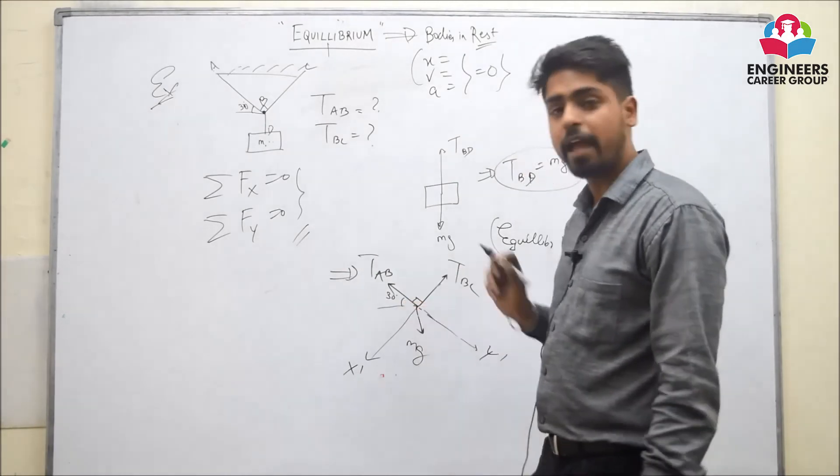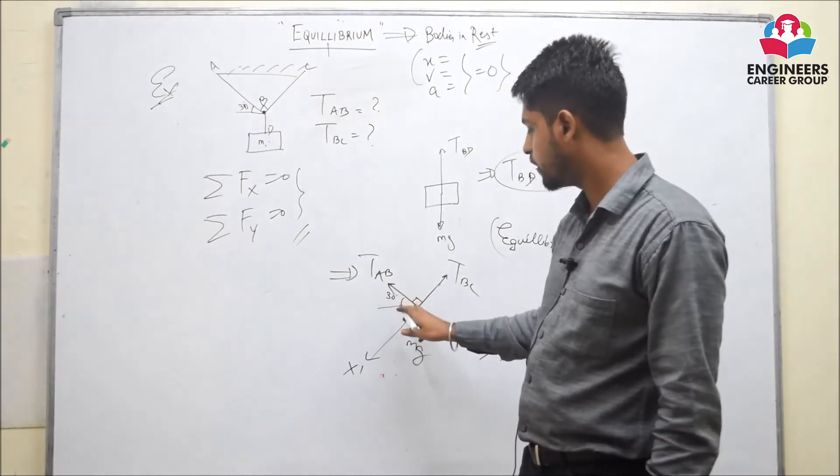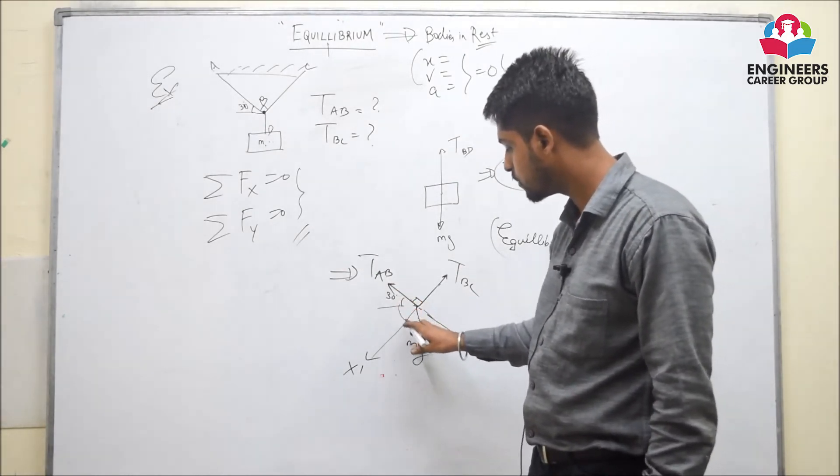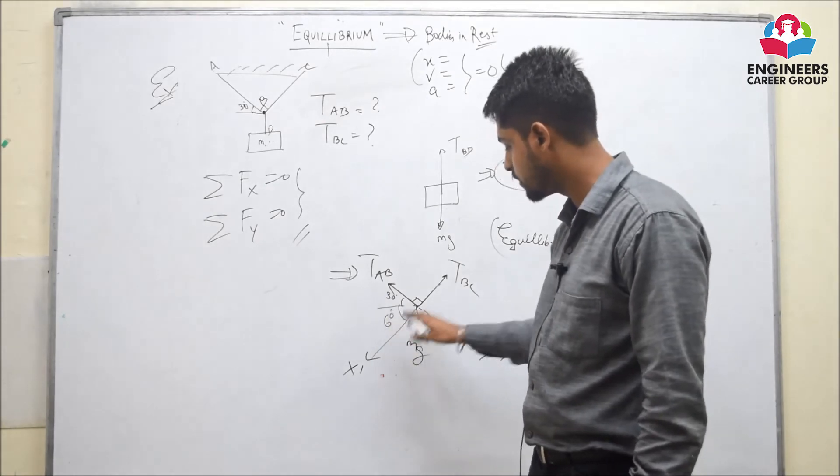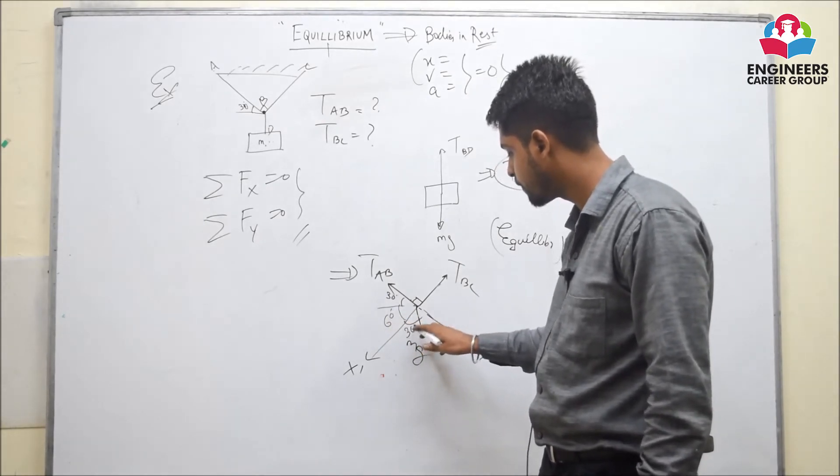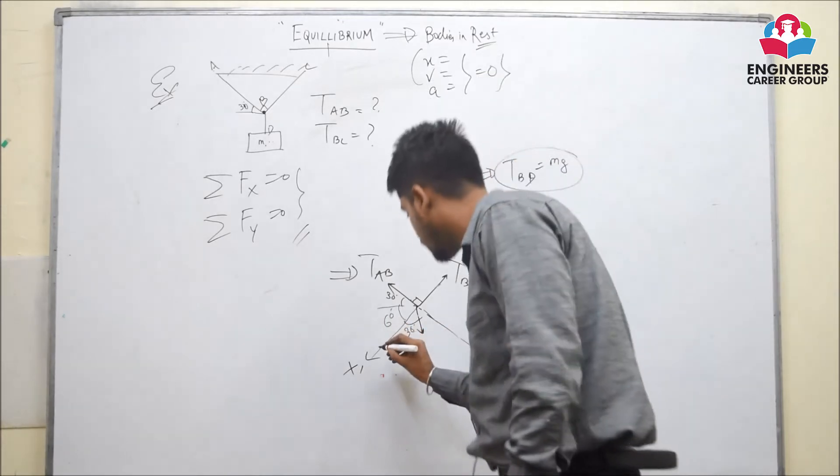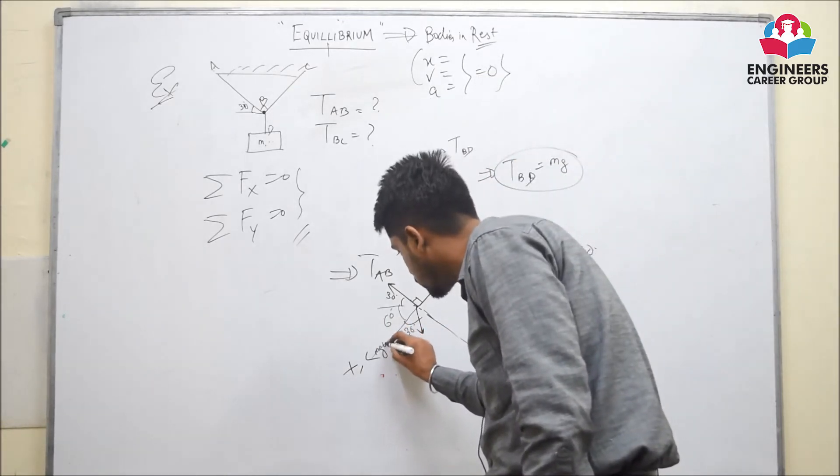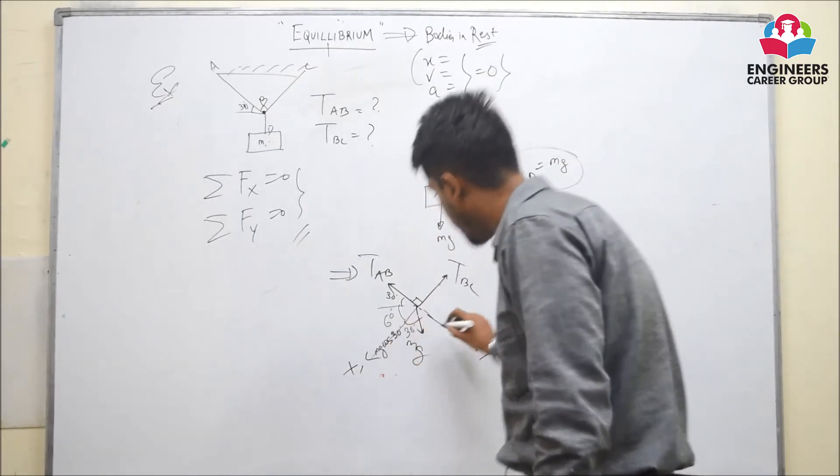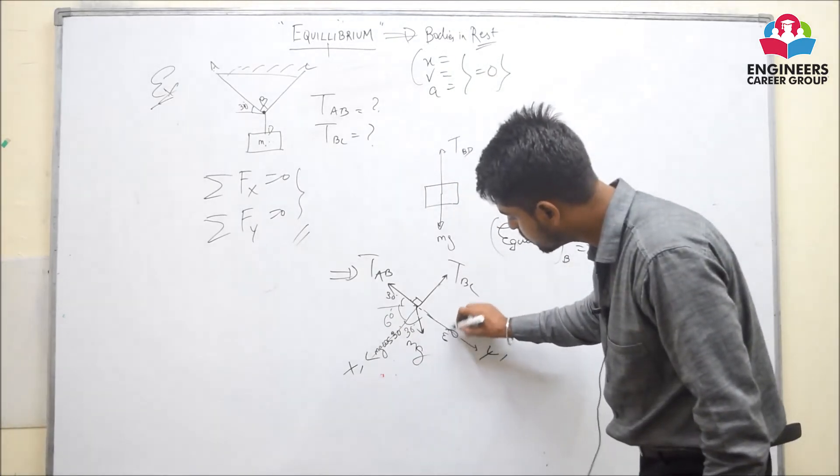First of all, we will calculate the angles. Since this angle is 30 degrees, since this is 90, so this is 60 degrees and since this is 60, so this is 30 degrees. Now we will calculate this component Mg cos 30 and other component will be Mg sin 30.